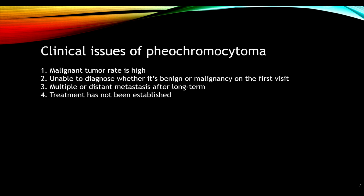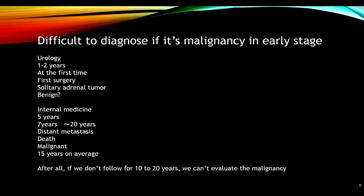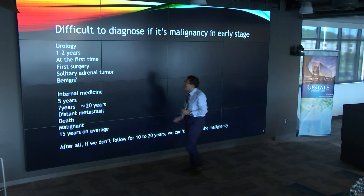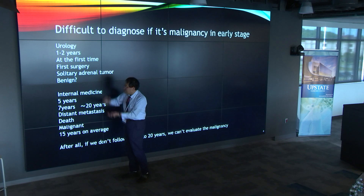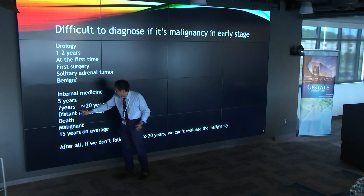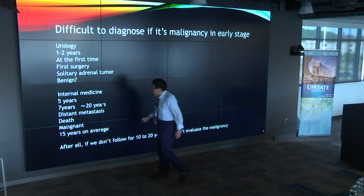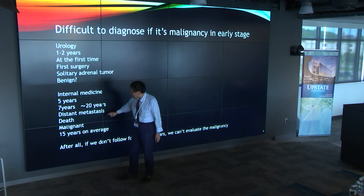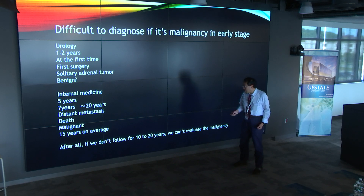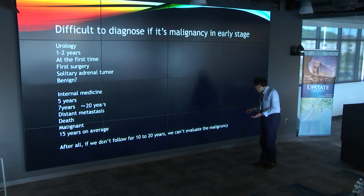When I used to work with Dr. Patek, we were using gene expression analysis to try to diagnose malignant versus benign, and we have some publications on that. It's difficult to diagnose malignancy in the early stage. As urologists, we see patients for only one or two years, then send them to internal medicine. Internal medicine has to follow-up for 7 to 20 years. Distant metastasis can occur over months, and on average 15 years of follow-up is necessary in Japan. If we don't follow-up for 10 to 20 years, we cannot evaluate malignant disease.